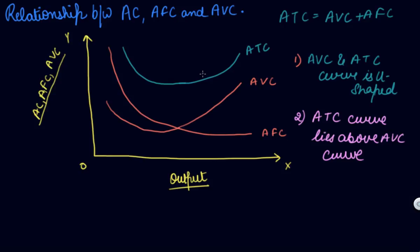So the ATC lies above the average variable cost curve. The third point is: the minimum point of the AVC curve is at the lowest output level, and that of the ATC curve is at the highest output level.